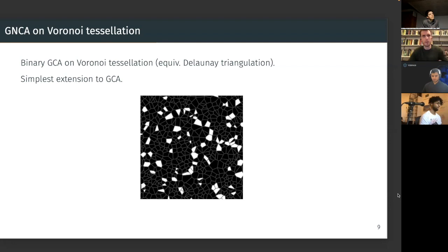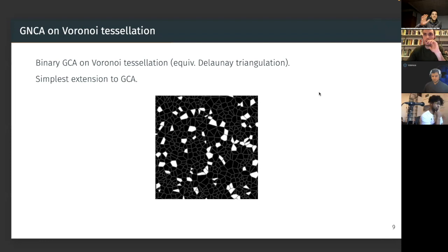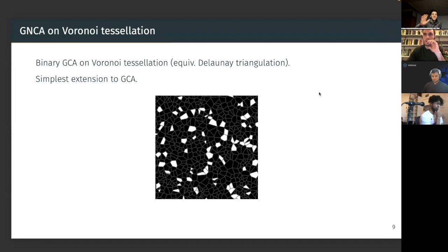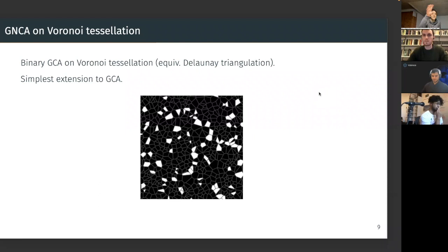The first experiment was the Voronoi tessellation GCA — the simplest possible extension of the Game of Life to the graph case. Instead of a regular grid, you have a Voronoi tessellation, where the graph is the Delaunay triangulation of the cells with binary states. The Delaunay triangulation connects the random points into triangles and describes the adjacency between cells. You take uniform random points on the plane, compute the Voronoi tessellation — subdividing the plane into regions where every point is closest to its centroid — and assign binary states randomly.